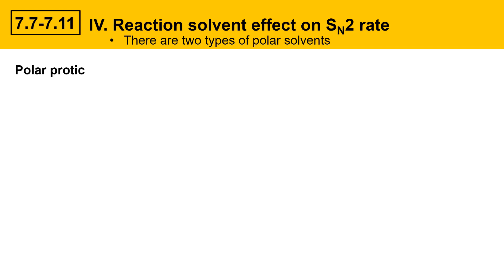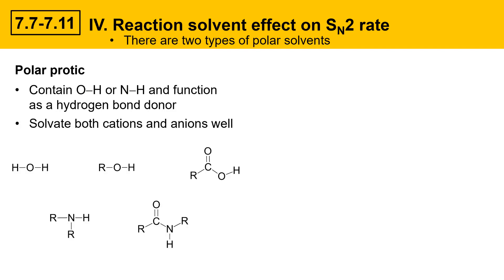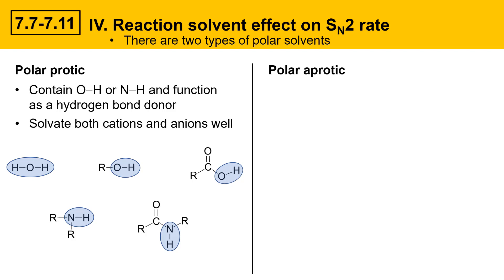There are two types of polar solvents. The first type are polar protic solvents. These contain an OH or NH and they function as hydrogen bond donors. They solvate cations and anions well. Here are some examples — in all of these cases, you can see there are OH groups or NH groups present in these particular solvents.